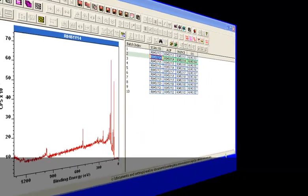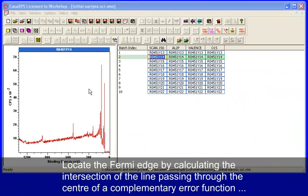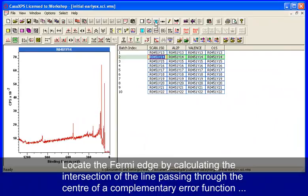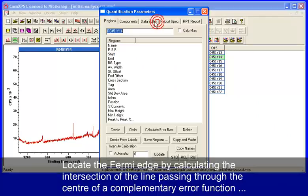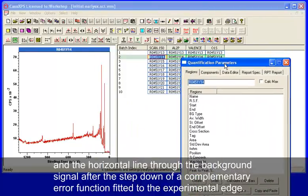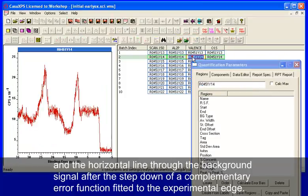We've got a step down in this case and the idea is to use a complementary error function and locate the position of the Fermi edge based on two lines that intersect.